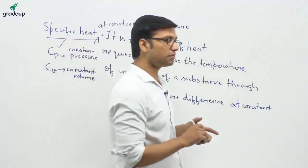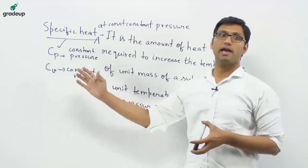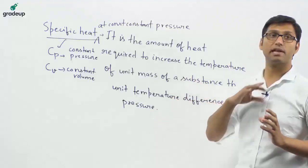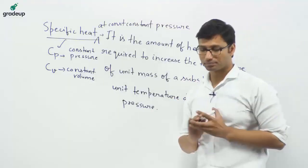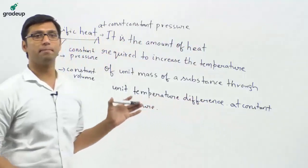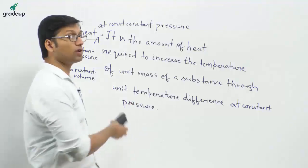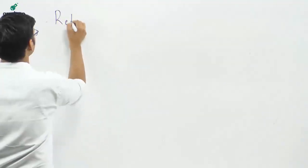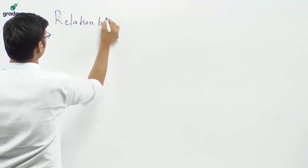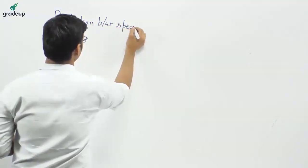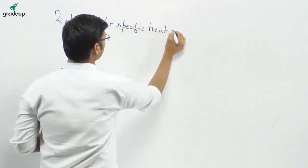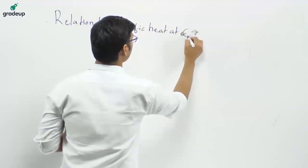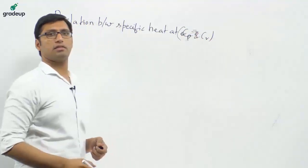Specific heat at constant pressure and volume are just the same as specific heat, with the condition of constant pressure and constant volume. These specific heats at constant pressure and volume are very important for thermodynamics. Let us see the relationship between Cp and Cv.